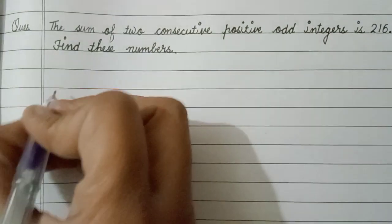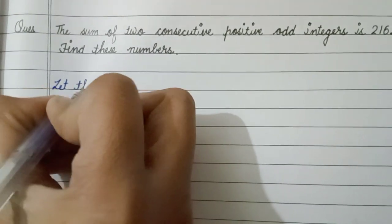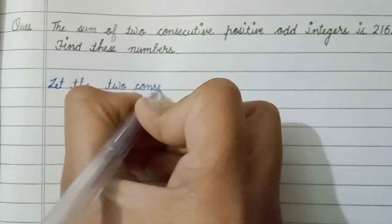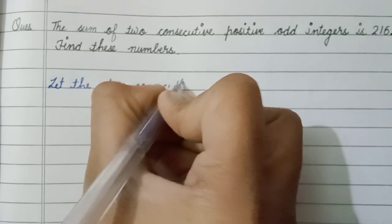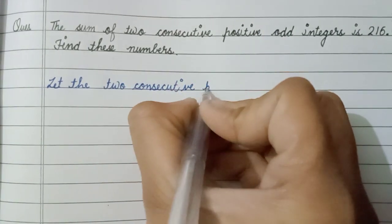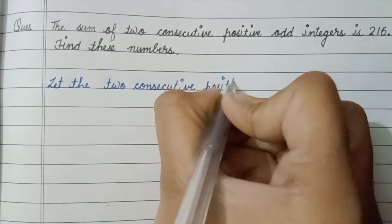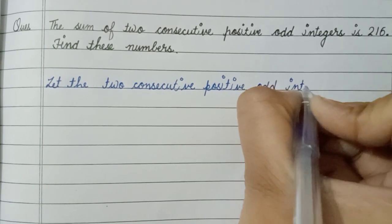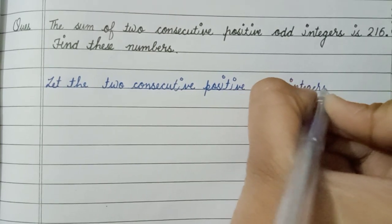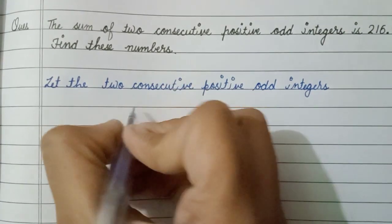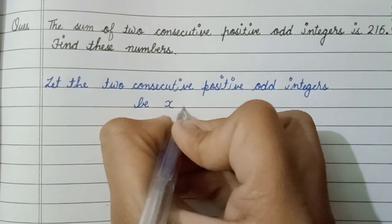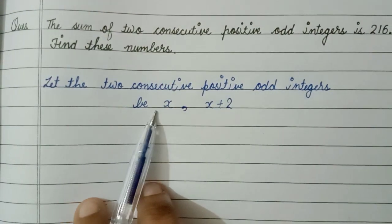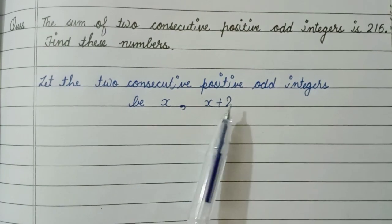First, we let the two consecutive positive odd integers be x and x plus 2. These two numbers are the consecutive odd integers.